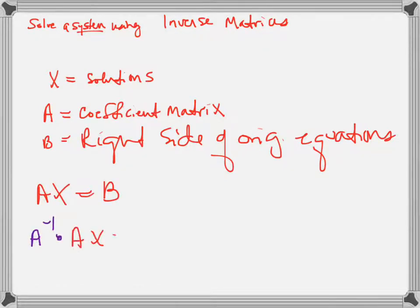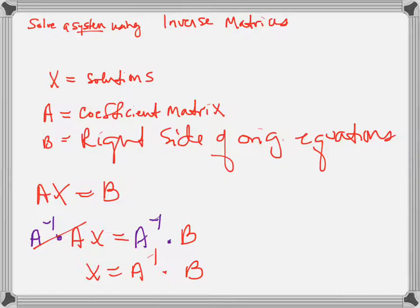If you look at the three matrices, we have A times X really does equal B. We want to solve for X. Since there isn't division in matrices, the only way to isolate X is to multiply by the inverse. Multiplication order matters with matrices, so I have to multiply on the left by A inverse on both sides. So A inverse times A times X gives just X, equals A inverse times B. That's where that formula comes from.